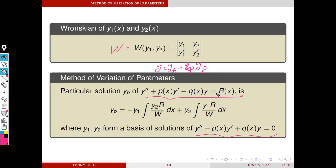Using this method, we can find YP using a formula. The advantage of this formula is there is no restriction on the right-hand side R(x). In our previous method — that is, the method of undetermined coefficients — R(x) must have special forms. Here there is no such restriction for R(x).